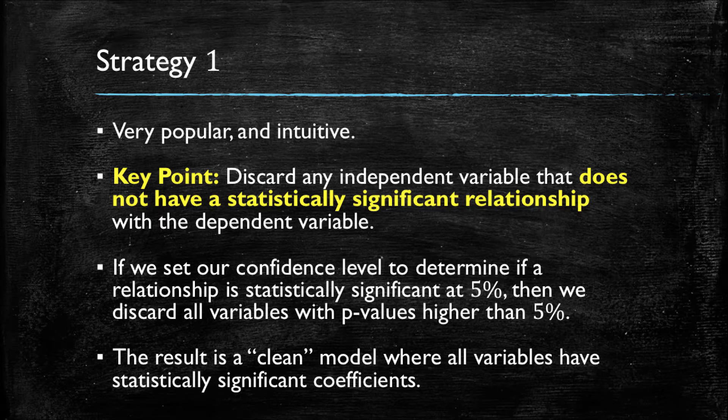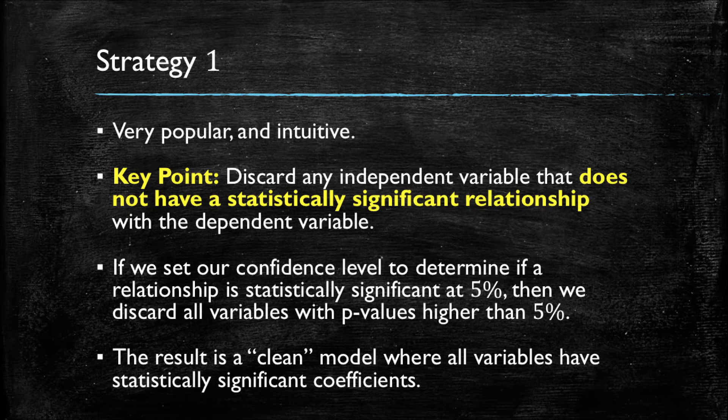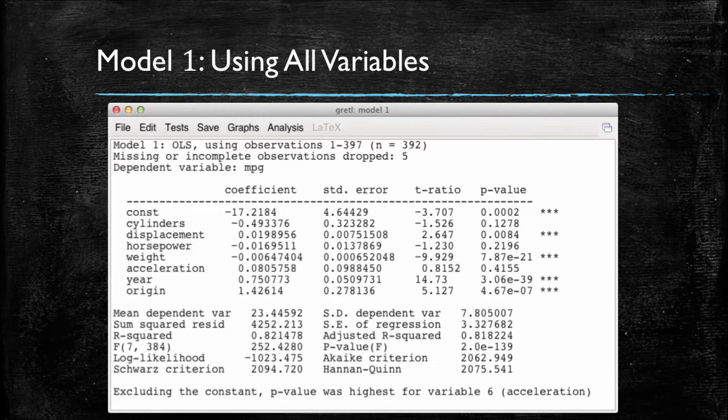So now let's throw all the variables we have at our disposal into the model, having MPG, the miles per gallon, as the dependent variable. The shown regression output shows that some variables have statistically significant relationships. However, some do not. In particular, cylinders, horsepower, and acceleration do not have small p-values. P-values of each of these are 12%, 21%, and 41%.